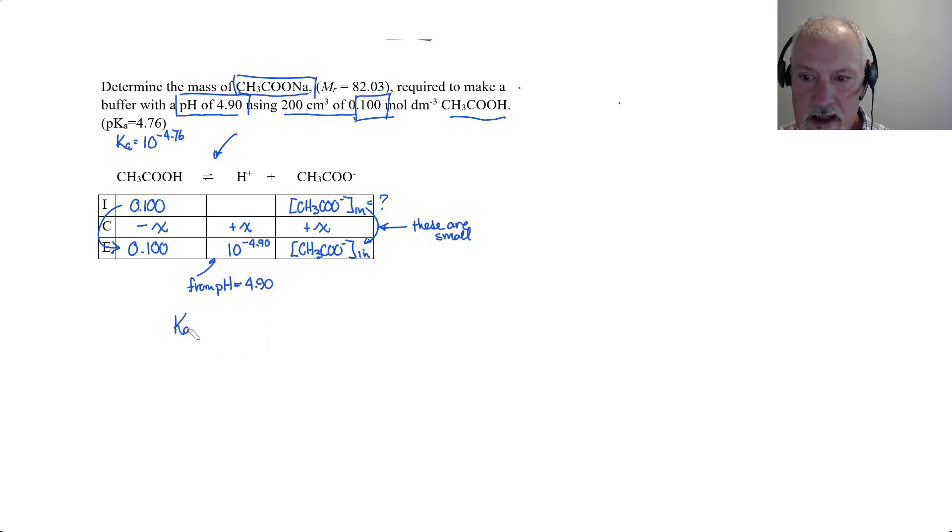So let's write what Ka is equal to. It's the concentration of the hydrogen ion times the concentration of my acetate ion divided by the concentration of my acetic acid. Let's put in these values. This is going to be 10 to the negative 4.76. The hydrogen ion is 10 to the negative 4.9. This is what I'm after, the concentration of my acetate ion, which we assume to be the same as the initial concentration, divided by the concentration of my acetic acid on the bottom, and that's the same as 10 to the negative 1.